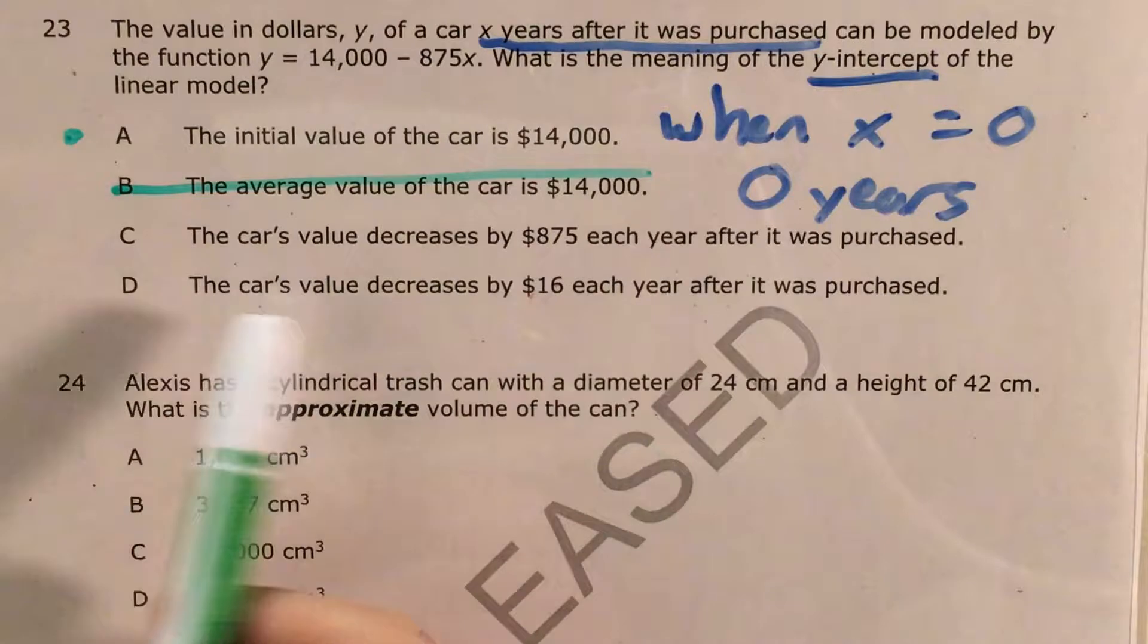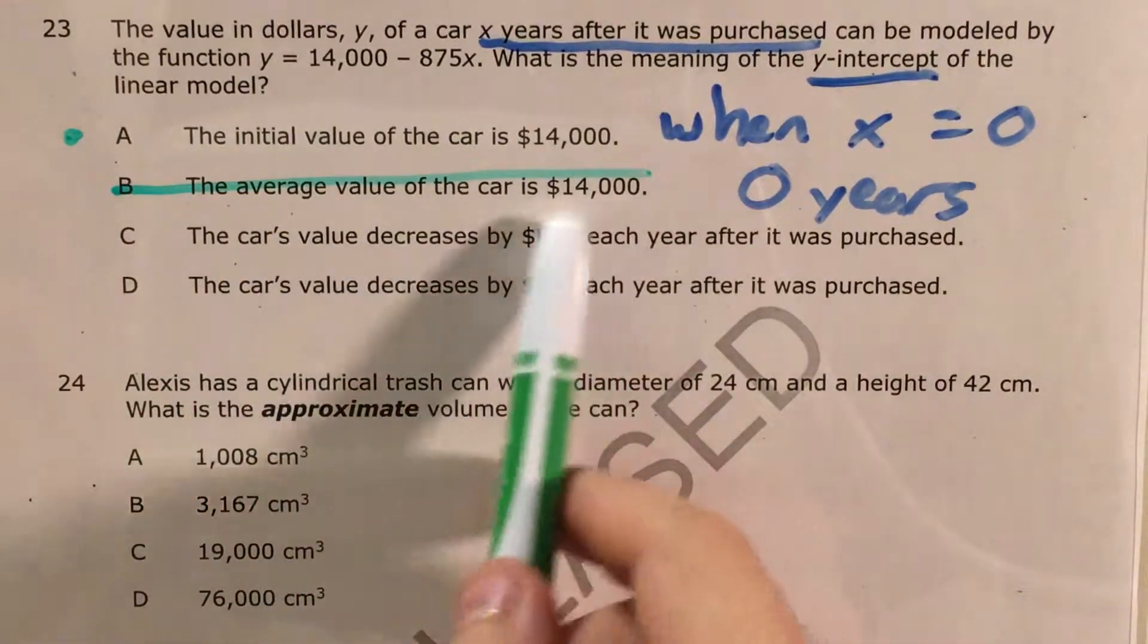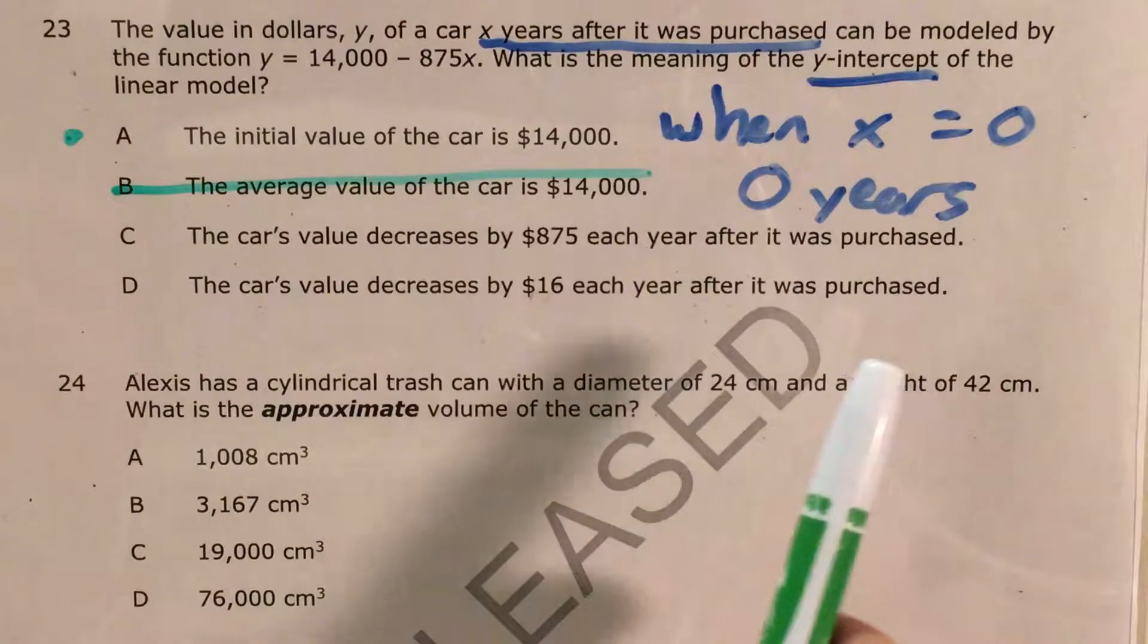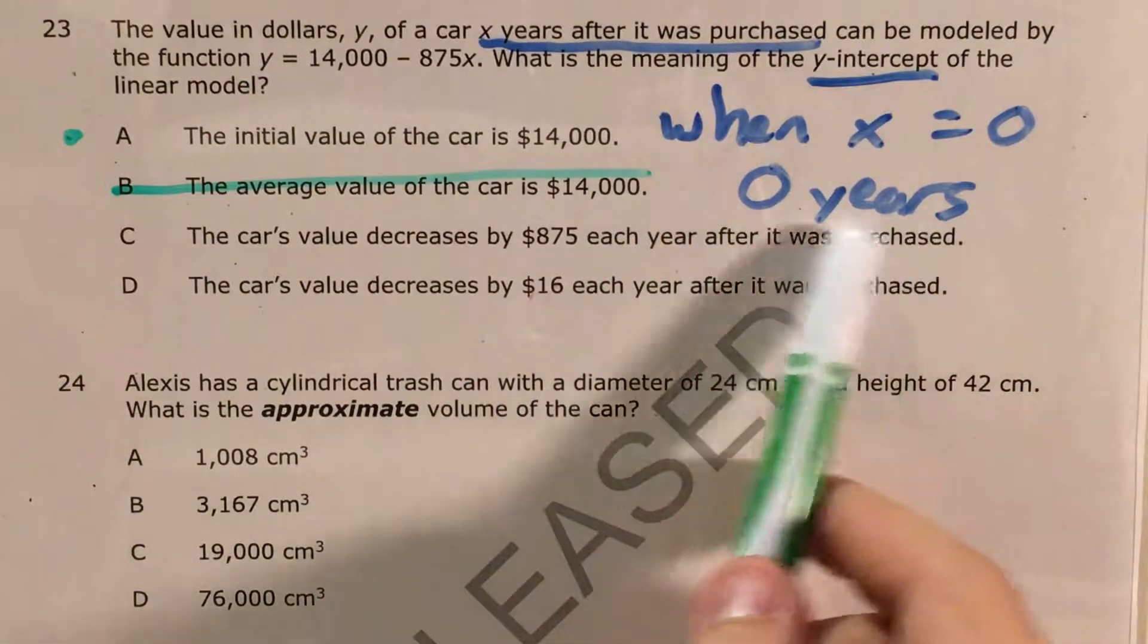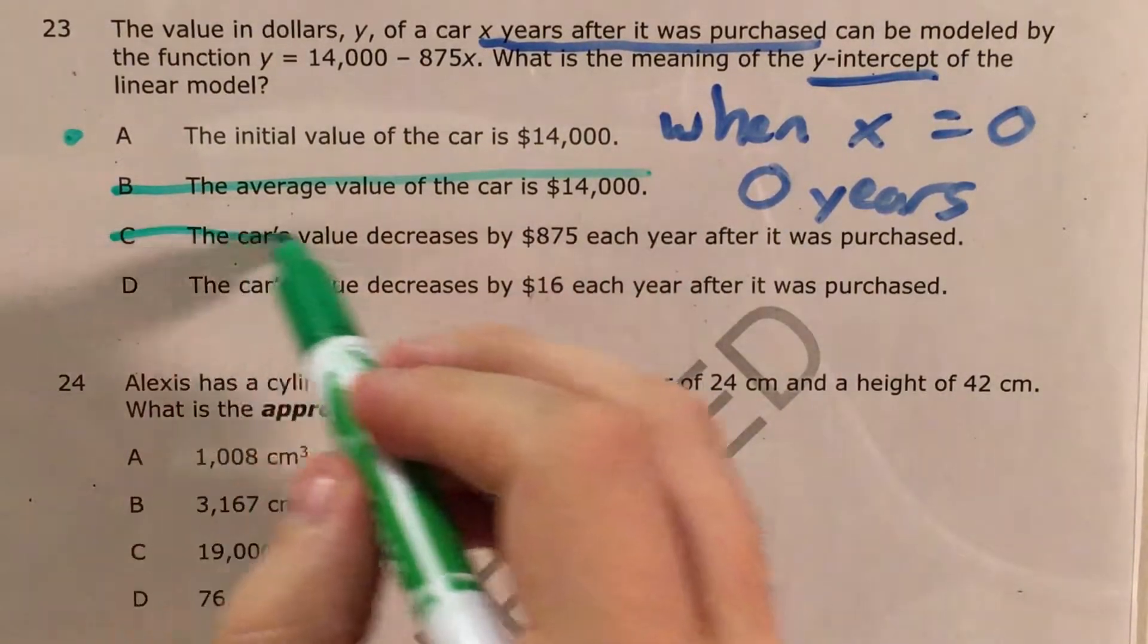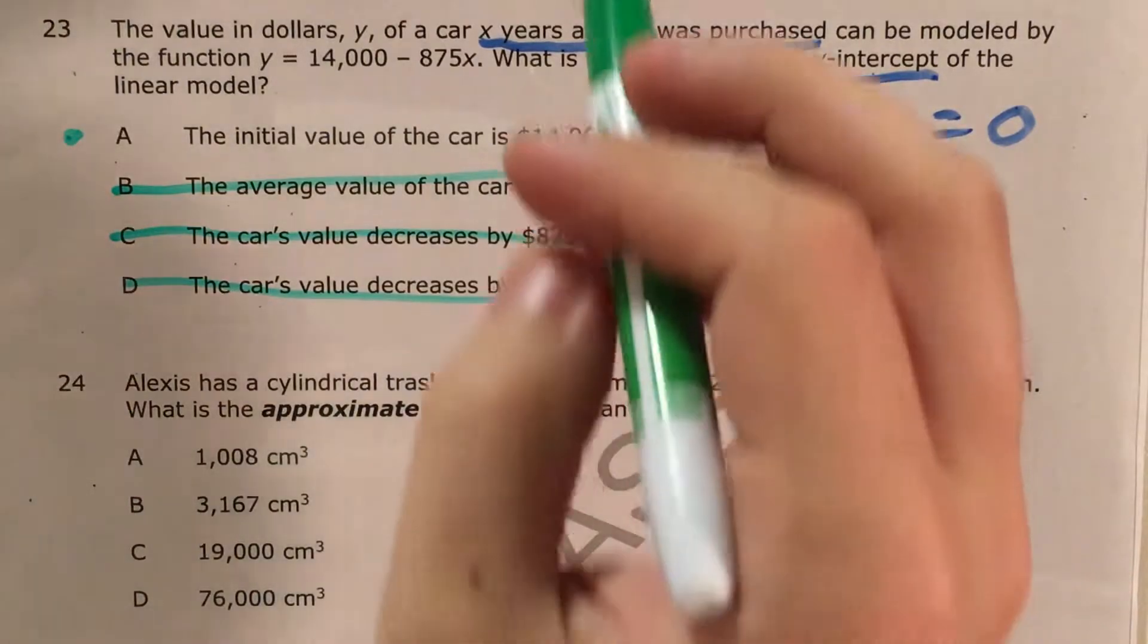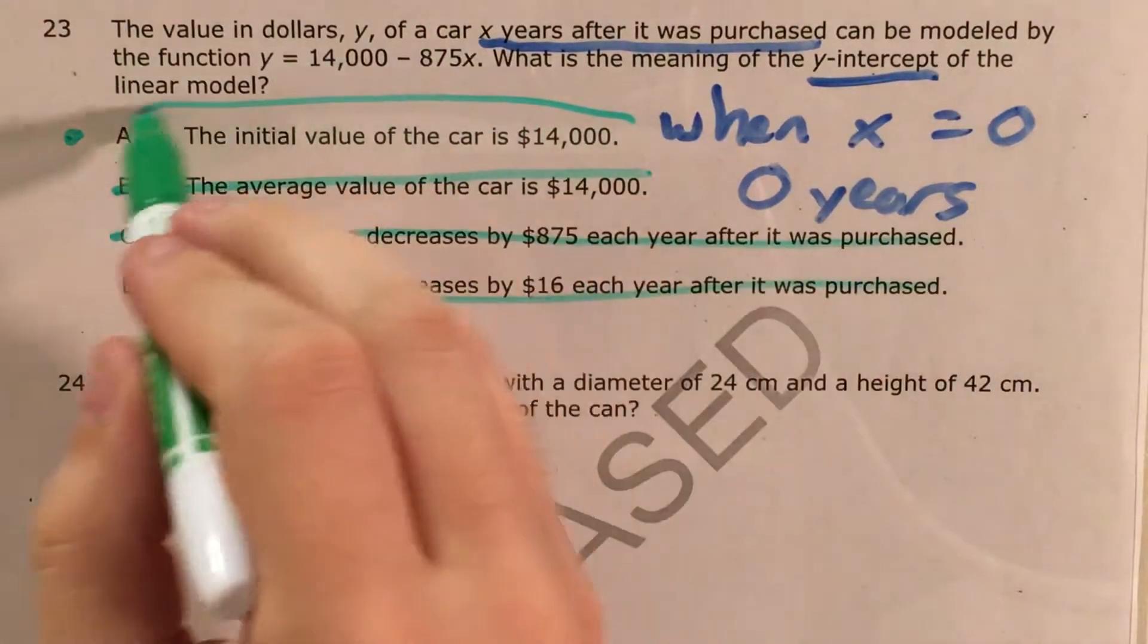Choice C and D have the same wording but different numbers. The car's value decreases by some amount each year after it was purchased. Well, let's go back to this meaning that the y-intercept is zero years. Any year after it was purchased automatically can't count as zero years. So, we're left with choice A.